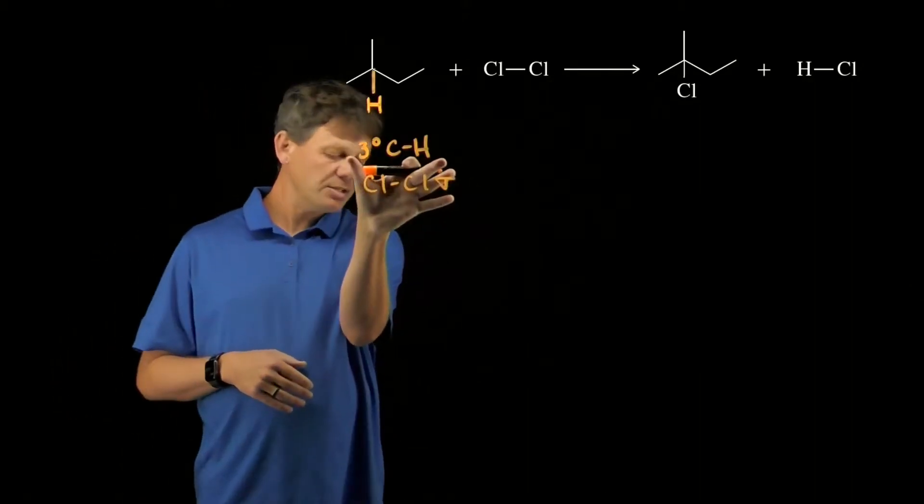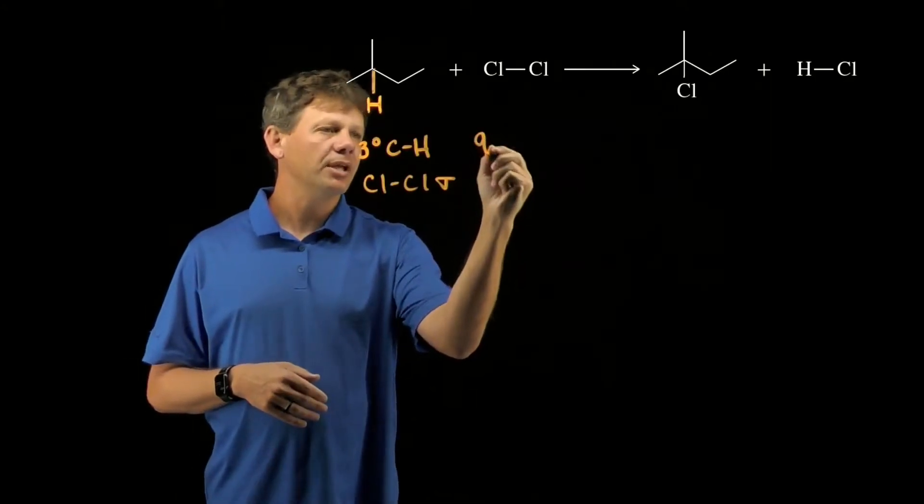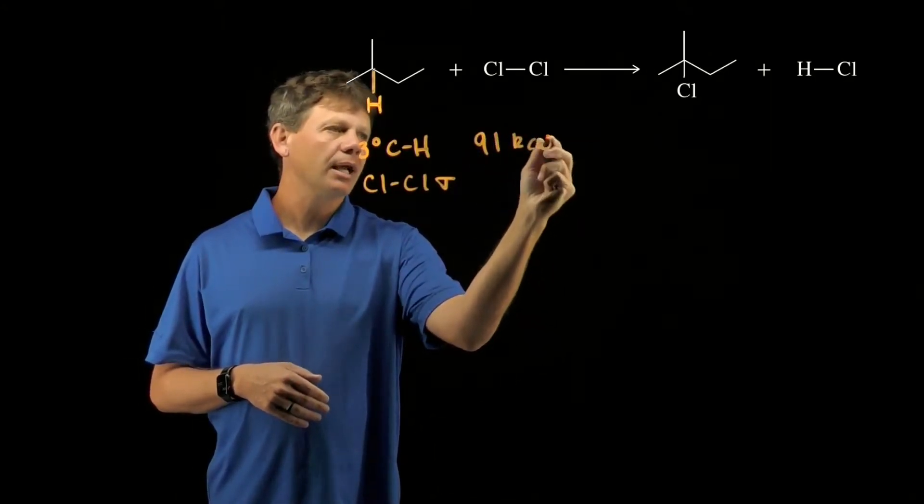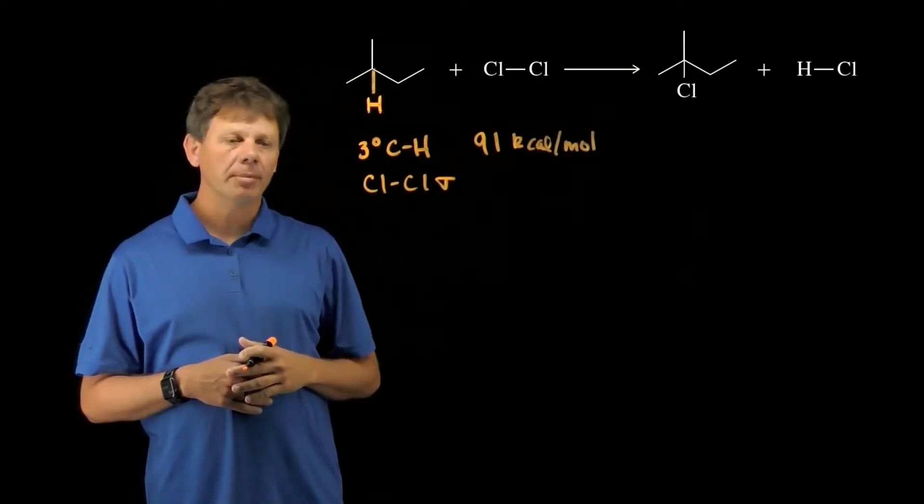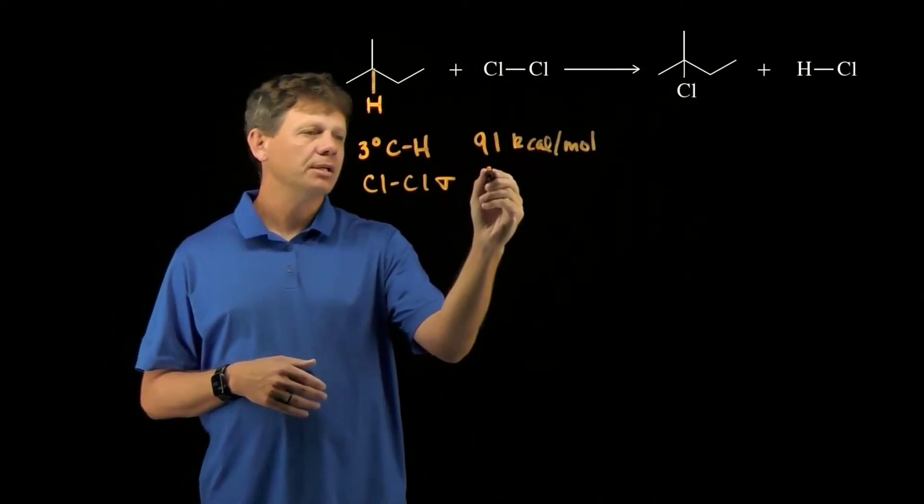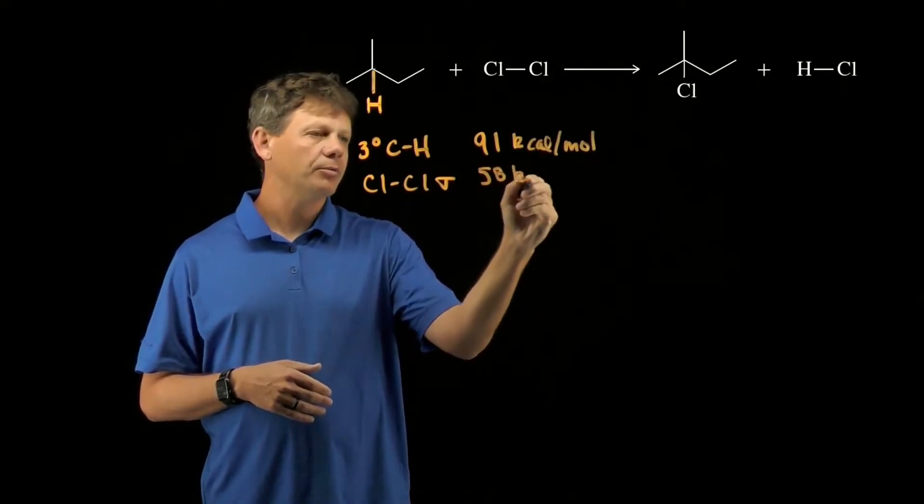The tertiary C-H bond has a bond association energy of 91 kilocalories per mole, whereas the chlorine-chlorine sigma bond has a bond association energy of 58 kilocalories per mole.